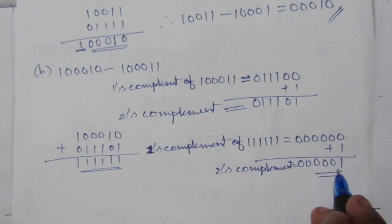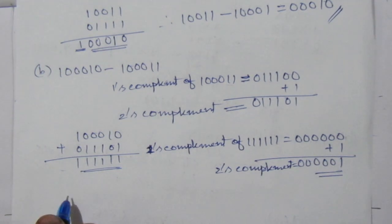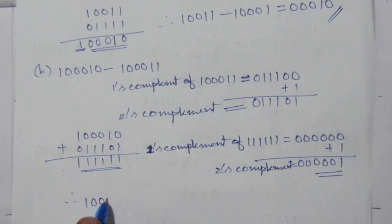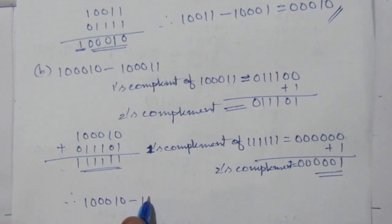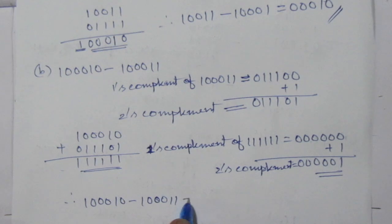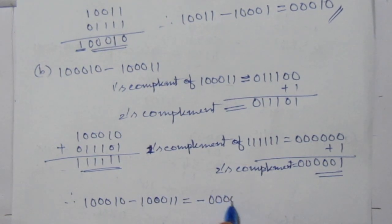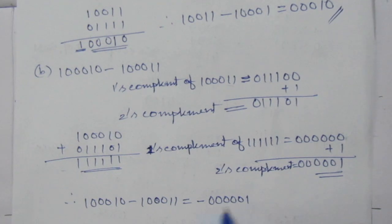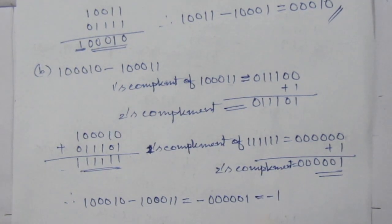You have to put a minus sign here. Therefore, 100010 minus 100011 equals minus 000001, or we can directly write it as equal to minus 1. So this second part is over.